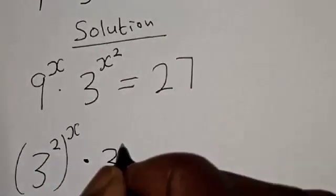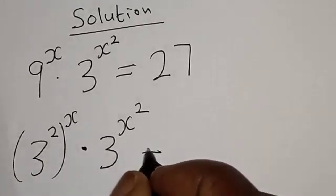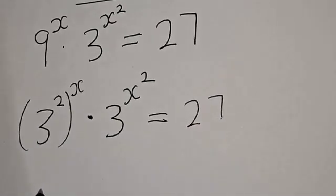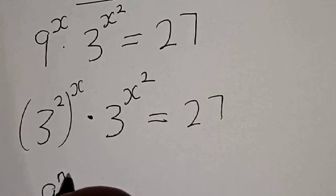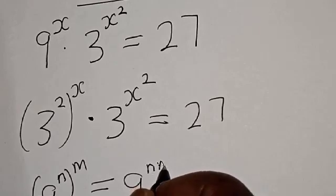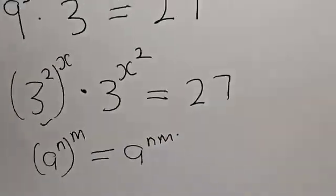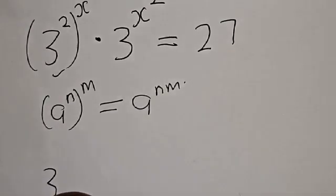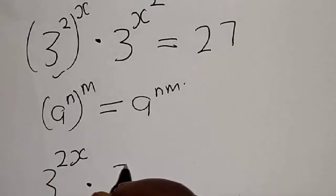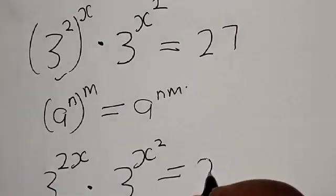So we have 3 squared raised to power s, multiplied by 3 raised to power s squared, is equal to 27. Remember, if you have a raised to power n, raised to power m, it is the same as a raised to power n times m. So this becomes 3 raised to power 2s, multiplied by 3 raised to power s squared, is equal to 27.